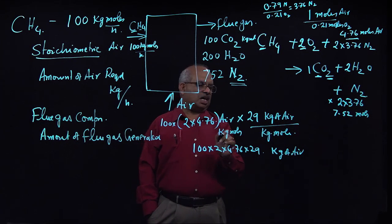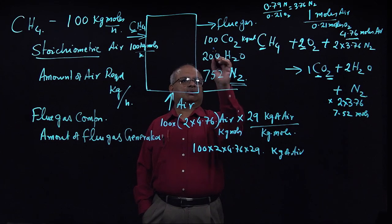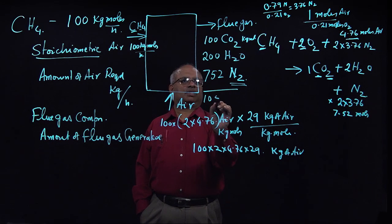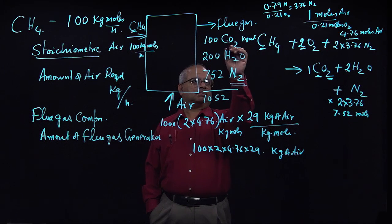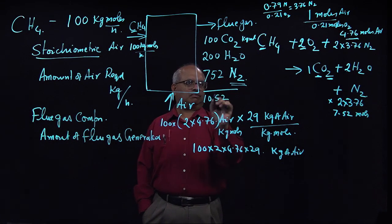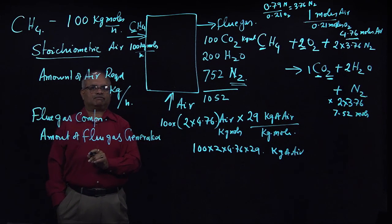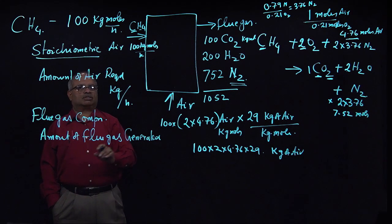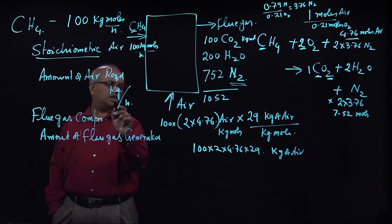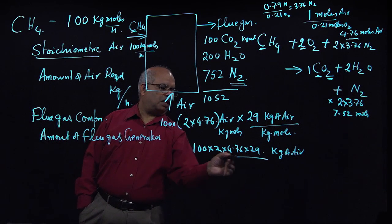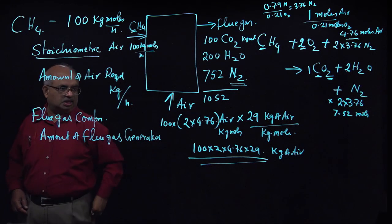We can determine the flue gas composition. Adding the totals: 100 kmol CO2 + 200 kmol H2O + 752 kmol N2 gives 1,052 kilogram moles total. From this, we can calculate the percentage of CO2, percentage of water vapor, and percentage of nitrogen as the flue gas composition.